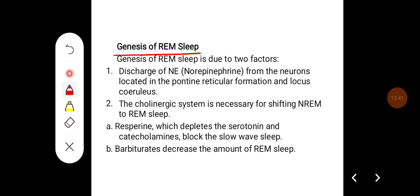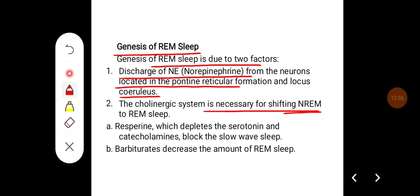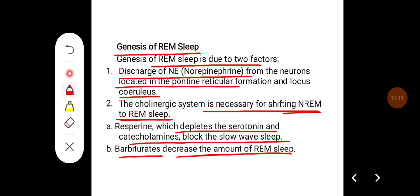Genesis of REM sleep is due to two factors: discharge of norepinephrine from neurons located in the pontine reticular formation and locus coeruleus, and the cholinergic system is necessary for shifting of NREM to REM sleep. Reserpine, a drug which depletes serotonin and catecholamines, blocks slow wave sleep. Barbiturates are drugs which decrease the amount of REM sleep.